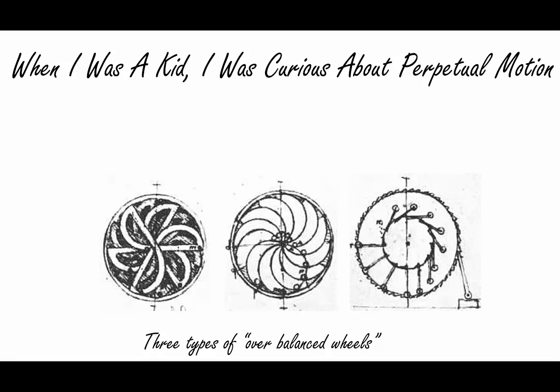Over the years, curious people have attempted to invent machines that would run forever. These machines were called perpetual motion machines. In this picture, these particular machines are called overbalanced wheels, and these pictures are over 600 years old, so it shows you people have been thinking about this idea for a long time.